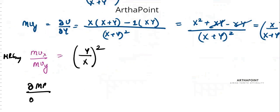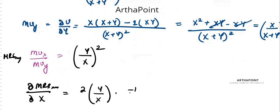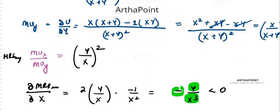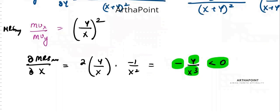Differentiate MRS with respect to x using the chain rule. This is clearly less than zero because y is greater than zero and x cubed is greater than zero, followed by a negative sign, so this becomes less than zero.